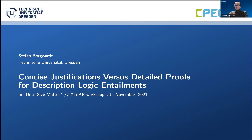Now I want to talk a bit more about the pure logical view. The talk is about description logics and about proofs and the justifications that Christian was also mentioning in the beginning, and in particular about the size of these things. This is an empirical comparison about how large justifications are versus how large corresponding proofs are.